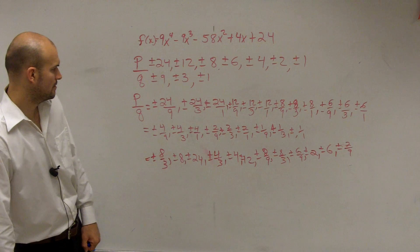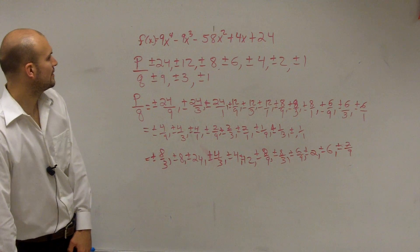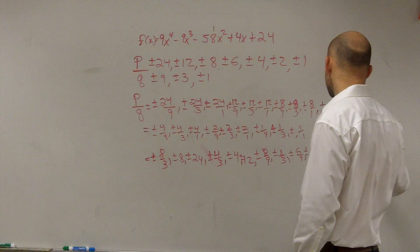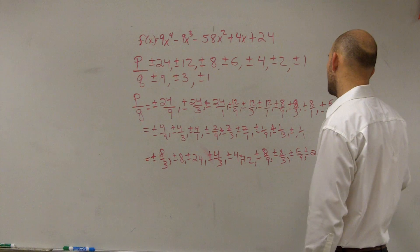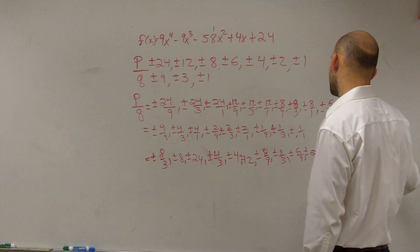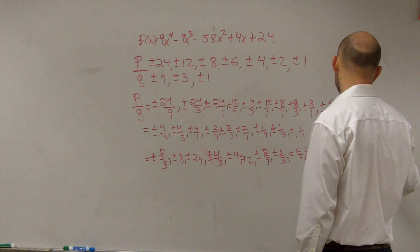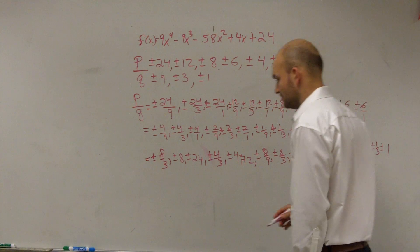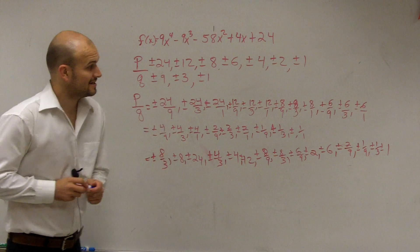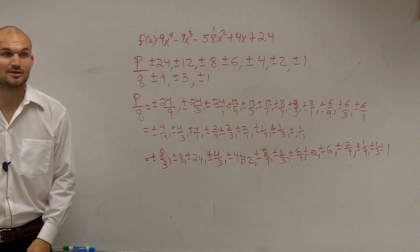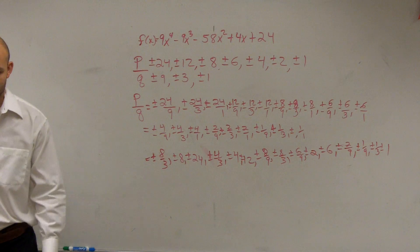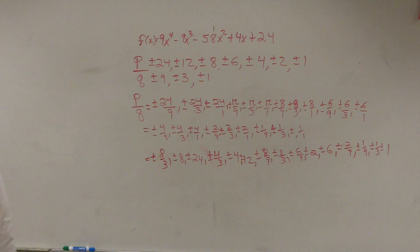So I have plus or minus 2 ninths. I already have 2 thirds and 2. But I do not have plus or minus 1 ninth, plus or minus 1 third, and plus or minus 1. It's a lot, but this is probably going to be longer than anything you even get on your test. It's good practice to make sure you write down all the factors. I'll go through and finish the rest of the problem — that's just doing your rational zero test.